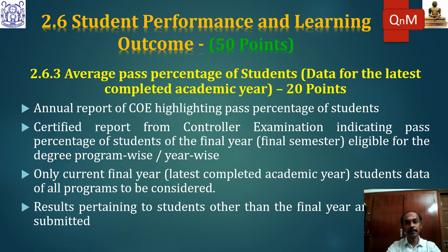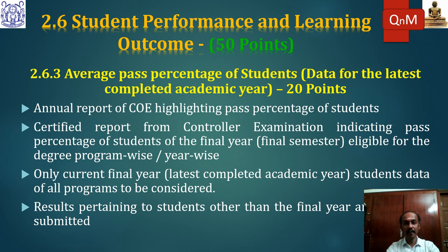Point 2.6.3 covers the average pass percentage of students for the latest completed academic year only. The Controller of Examinations should prepare a certified report indicating program-wise and year-wise pass percentage of final year, final semester students. Previously, all semester results for five years had to be uploaded in the SSR, but now only final year, final semester pass percentage data is sufficient.